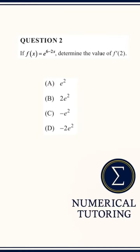This is a Maths Methods exam question, similar to the ones in my Maths Methods practice exams. We're asked to find f dash of 2, given f of x equals e to the power of 6 minus 2x.